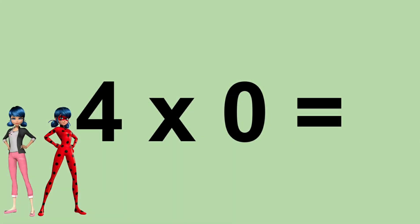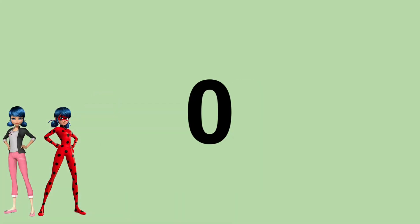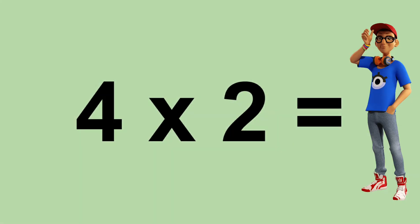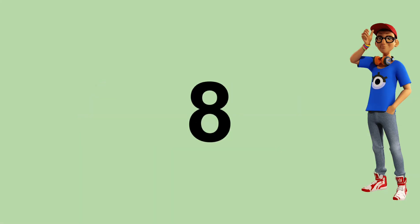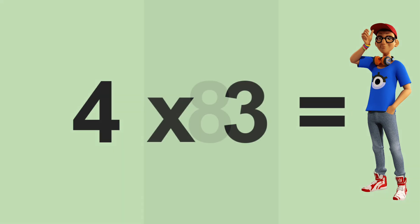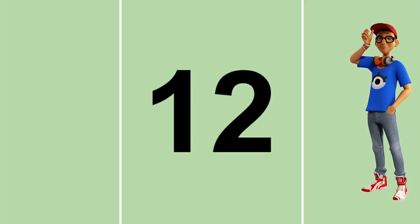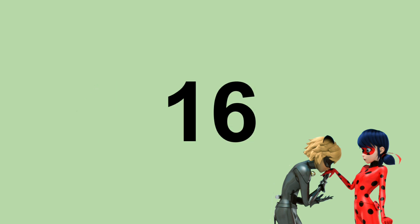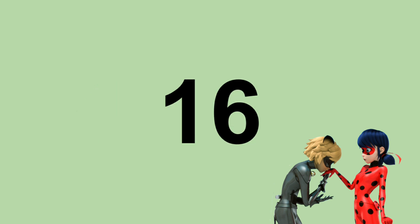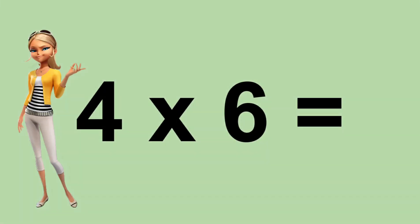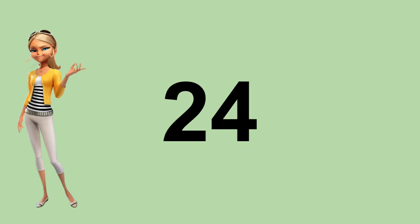Four times zero equals zero. Four times one equals four. Four times two equals eight. Four times three equals twelve. Four times four equals sixteen. Four times five equals twenty. Four times six equals twenty-four.